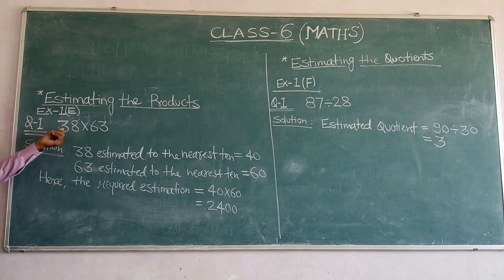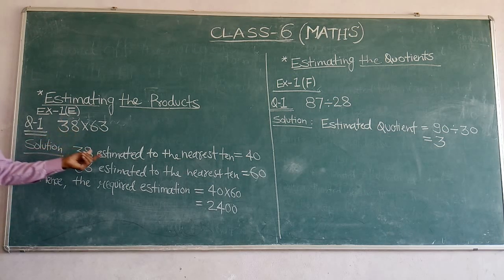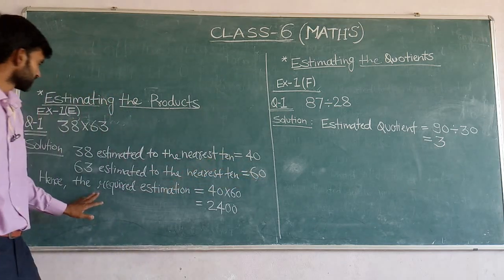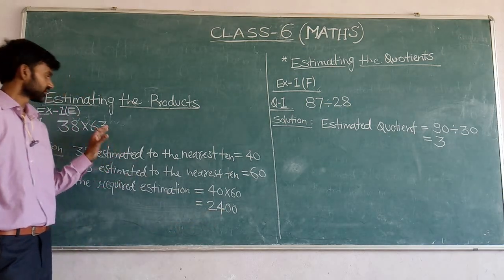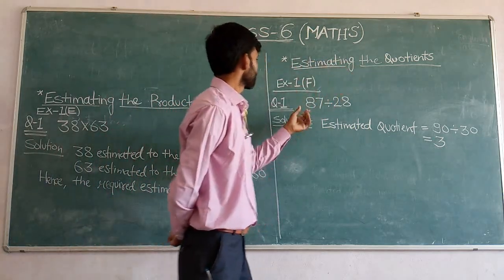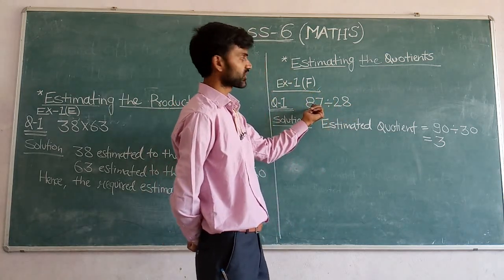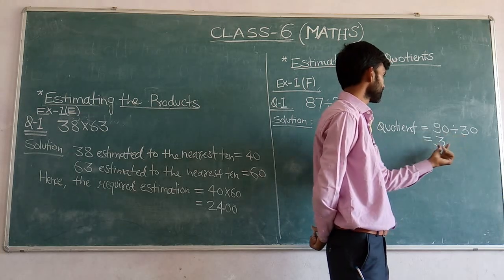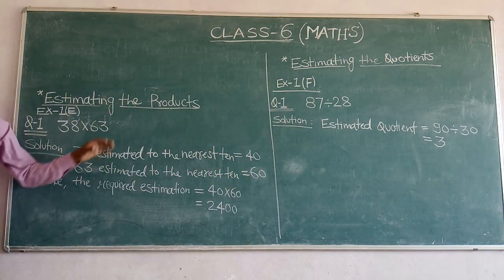In exercise 1E, we have estimation of the product. 38 estimated to the nearest ten is 40, and 63 estimated to the nearest ten is 60. The required estimation is 40 into 60, which equals 2400. For the estimation of the quotient, question 7: estimate 87 divided by 28. The nearest ten of 87 is 90, and the nearest ten of 28 is 30. So the estimated quotient is 90 divided by 30, which equals 3. These are the estimations of product and quotient.